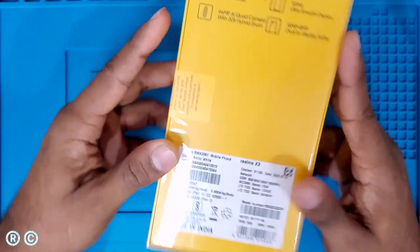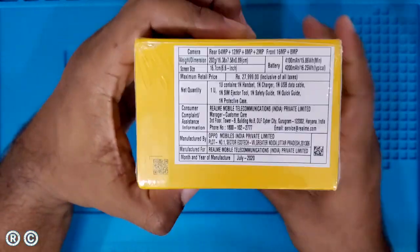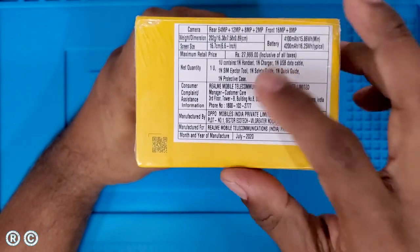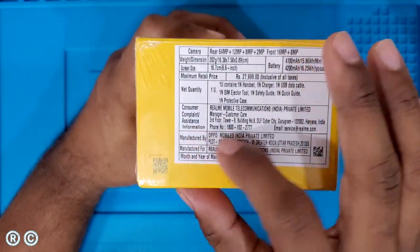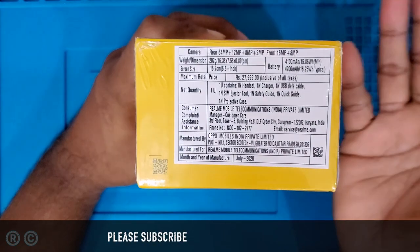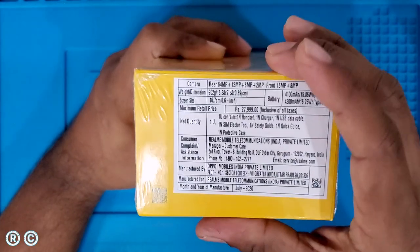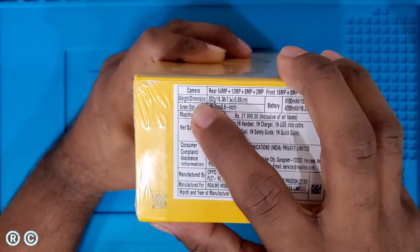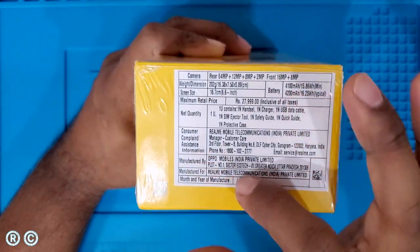At the top, there's branding. Inside you'll find price details, customer complaints information, battery details, weight, screen size, manufacturer, and everything.